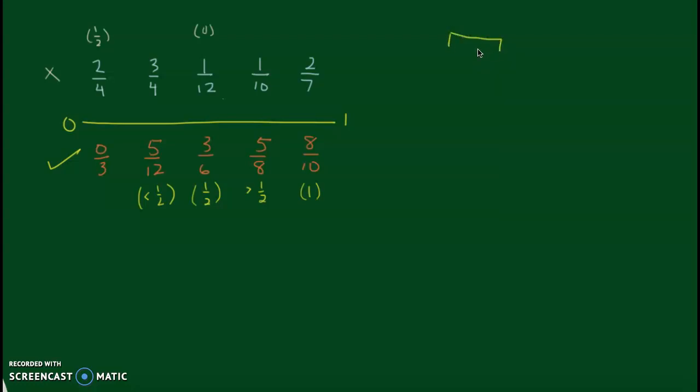So if I have 1 half and if I have 1 third, the numerators are the same. They're both 1. But the denominator, this would be 1 half, 1 third. The smaller the denominator, the bigger the piece. So if I kept going and did 1 fourth, 1 fifth, the pieces would keep getting smaller.